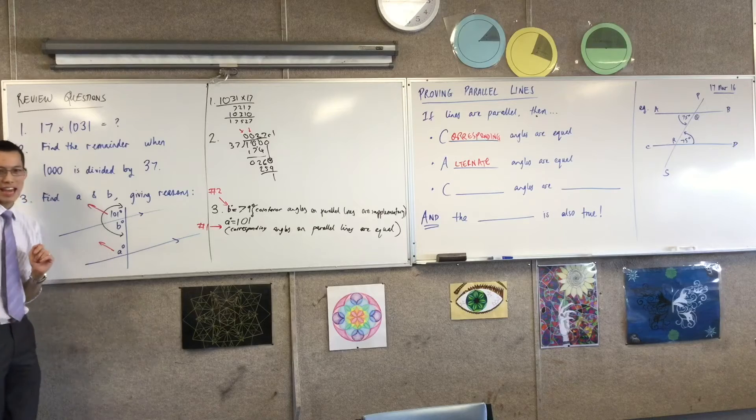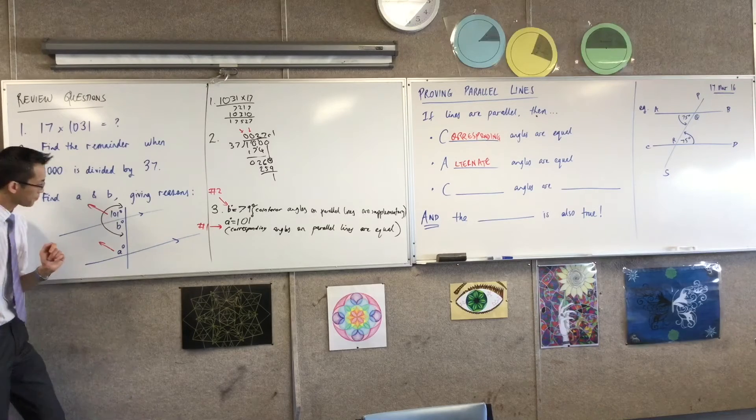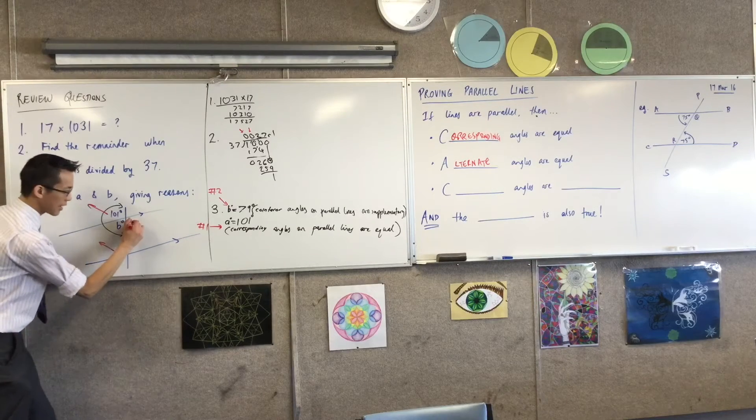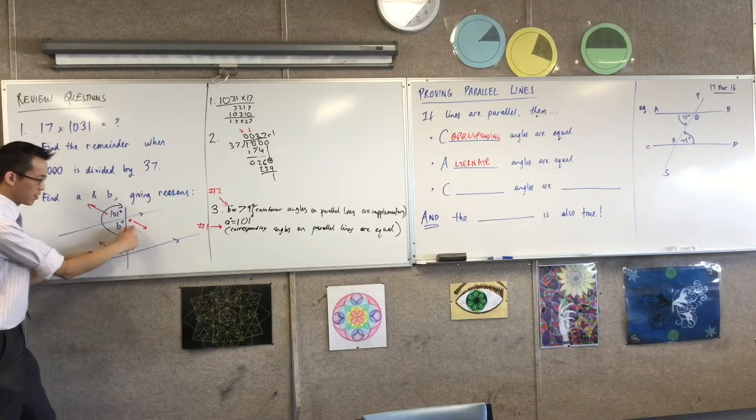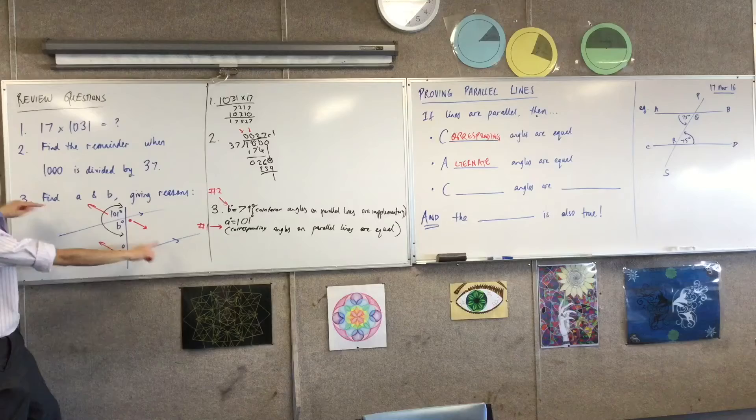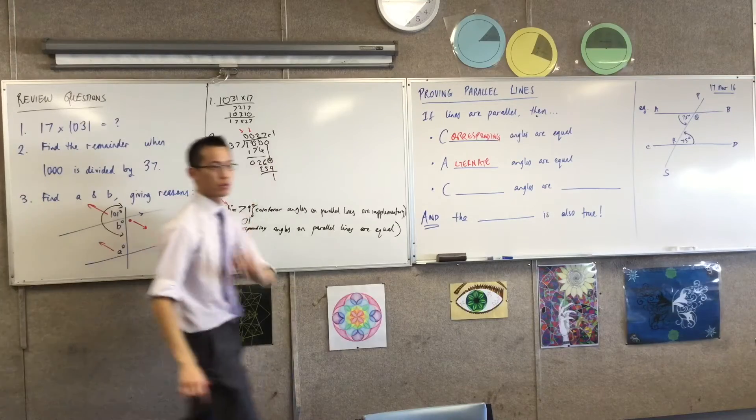For example, which one's alternate to A? That's a bit of a sneaky one. Yeah, the one next to B. Okay, so this guy here, right? This guy will be facing the opposite direction, and it's on the other side. So these guys, they're alternate, right? Alternate angles, equal.